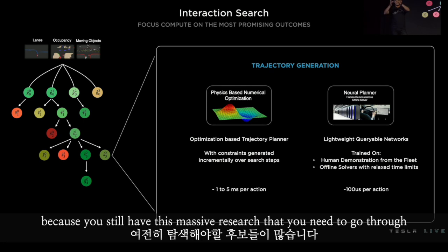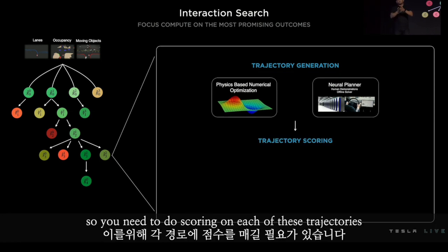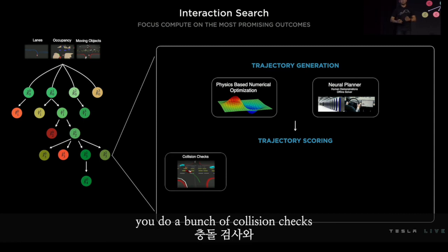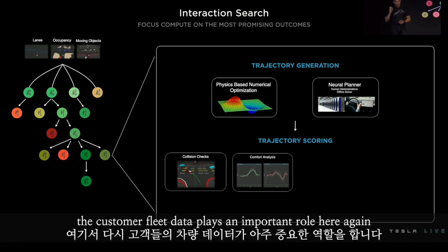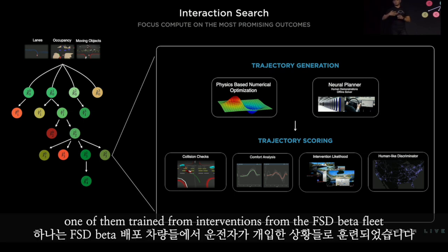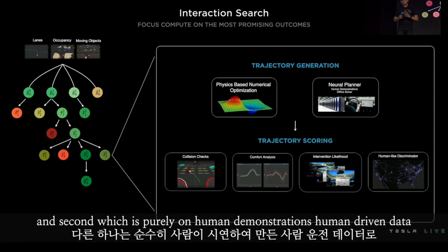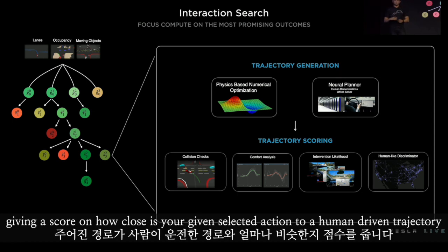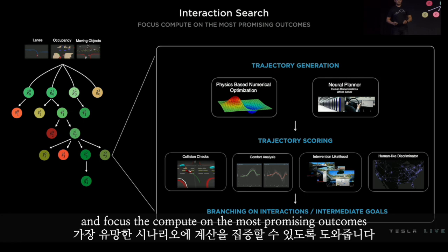Doing this alone is not enough, because you still have this massive tree search that you need to go through and you need to efficiently prune the search space. You need to do scoring on each of these trajectories. A few of these are fairly standard — you do a bunch of collision checks, comfort analysis: what is the jerk and acceleration required for a given maneuver? The customer fleet data plays an important role here again. We run two sets of lightweight queryable networks that augment each other: one trained from interventions from the FSD beta fleet, giving a score on how likely a given maneuver is to result in interventions over the next few seconds; and second, trained purely on human demonstrations, giving a score on how close your selected action is to a human-driven trajectory. The scoring helps us prune the search space, keep branching further on the interactions, and focus compute on the most promising outcomes.